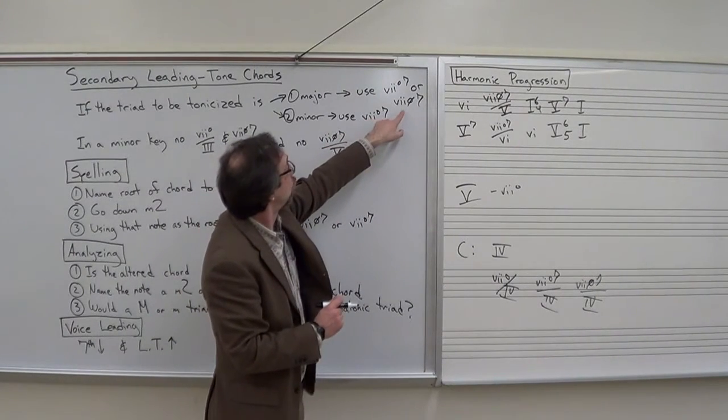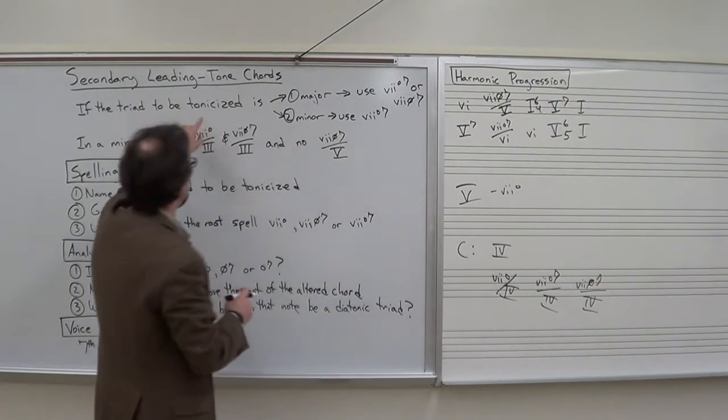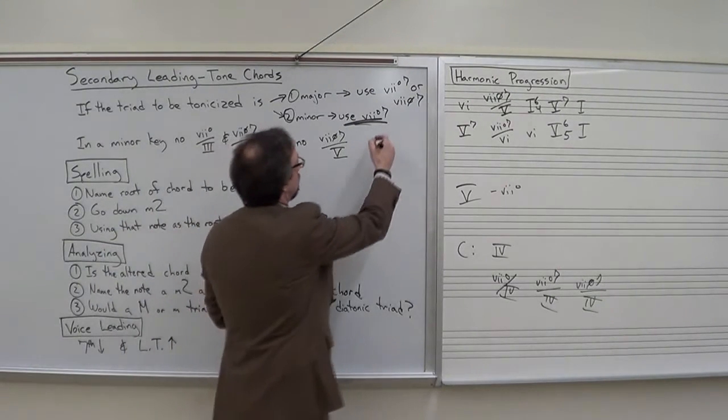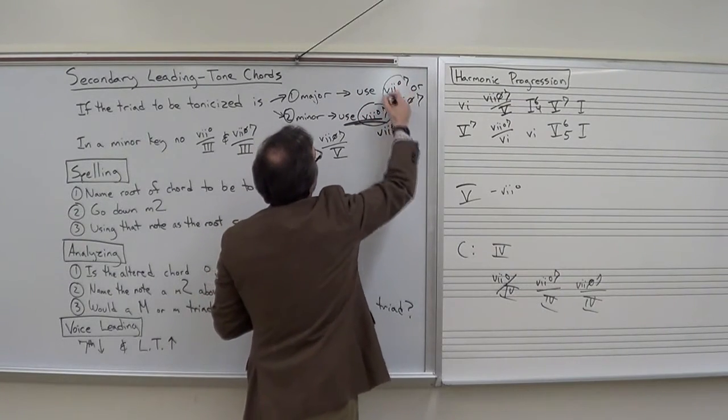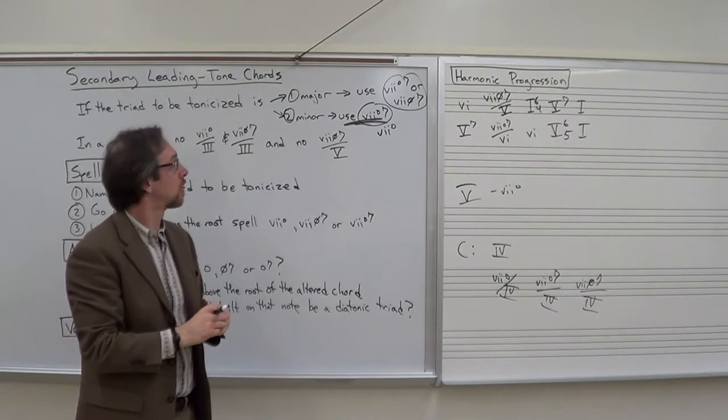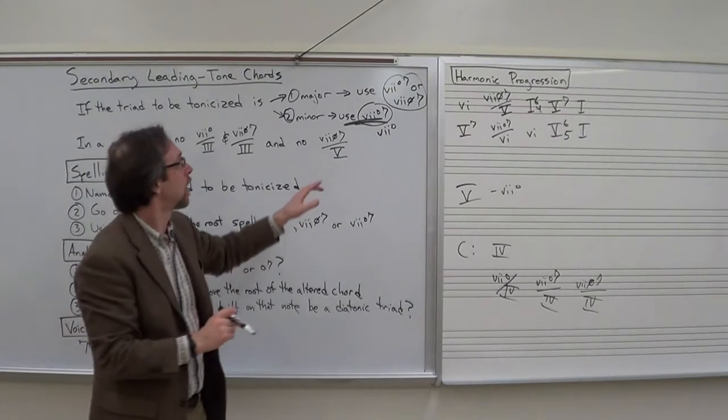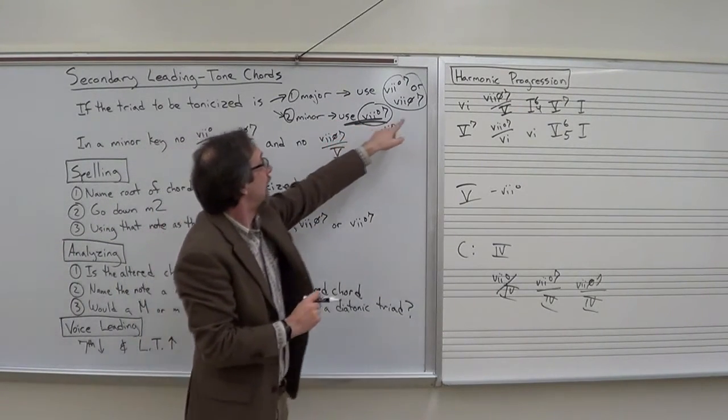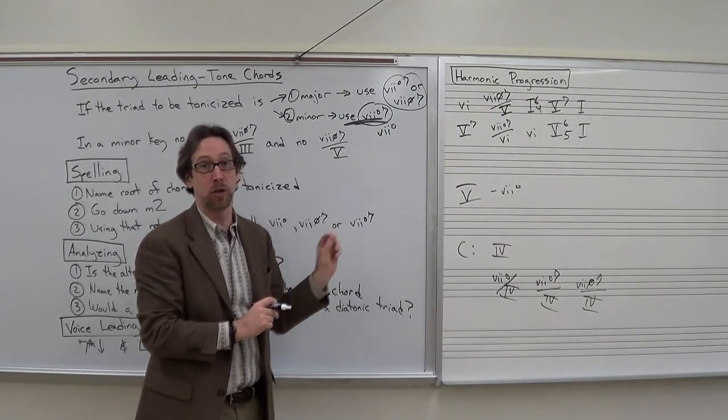Let's examine why that would be. Normally, why do we have this distinction? Because when we go to minor, if it's a minor triad that's going to be tonicized, you're only allowed to use 7 diminished 7 or 7 diminished. This is referring primarily to what kind of 7th chord of the leading tone 7th you can use. The triad, the 7 diminished triad, is always fair game.